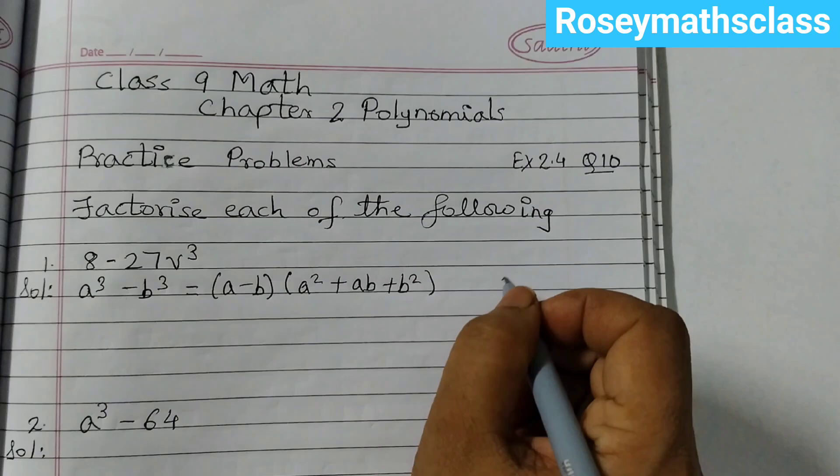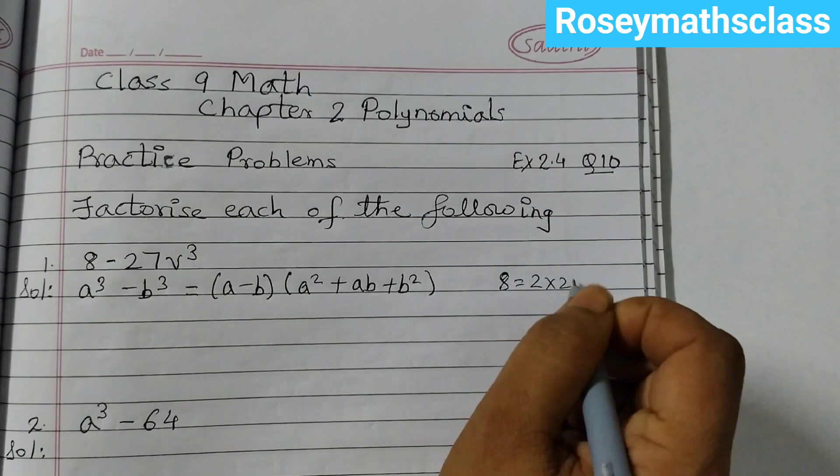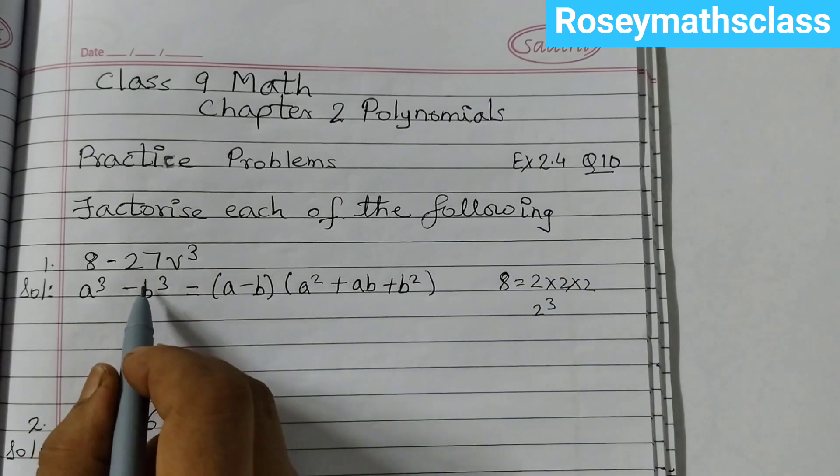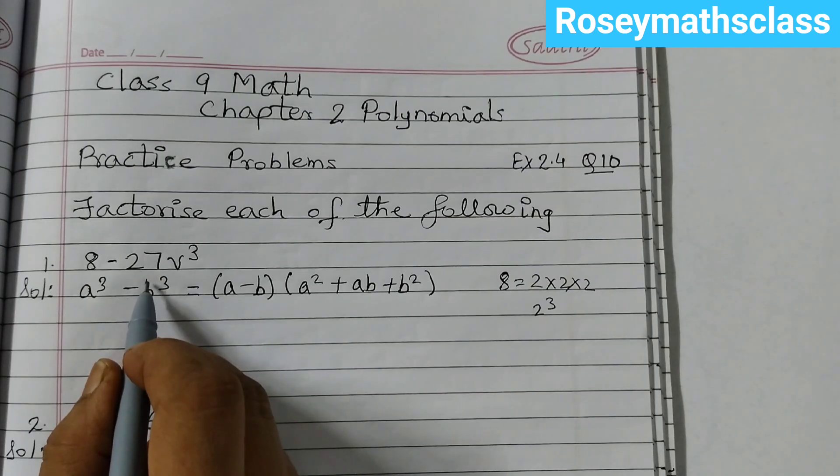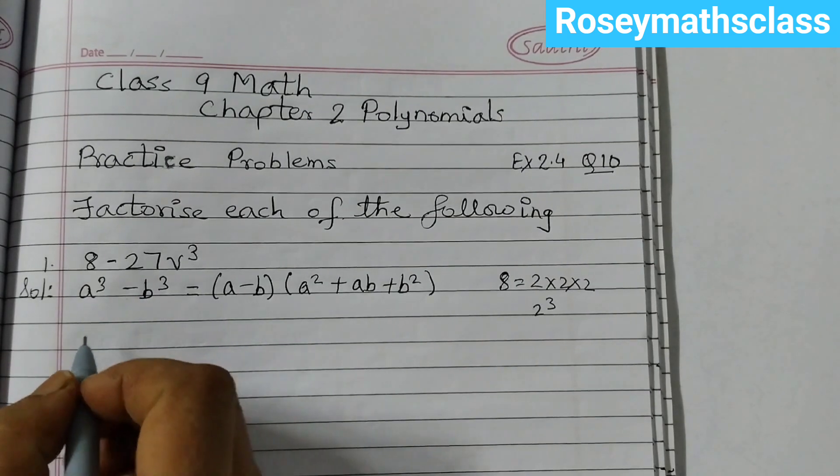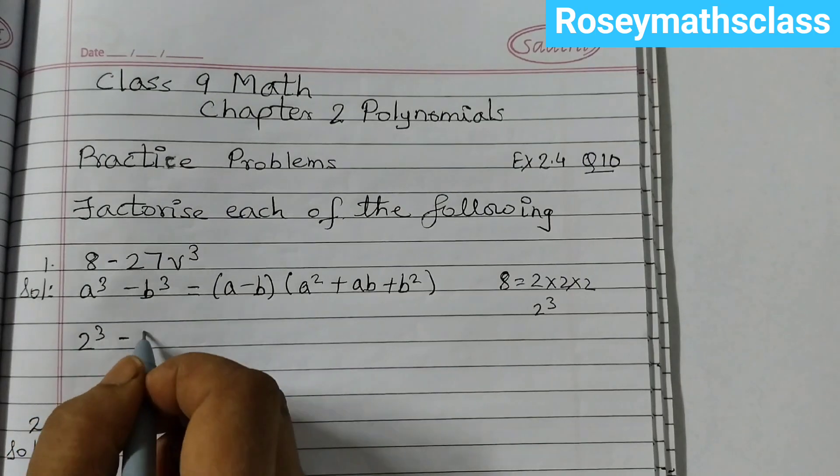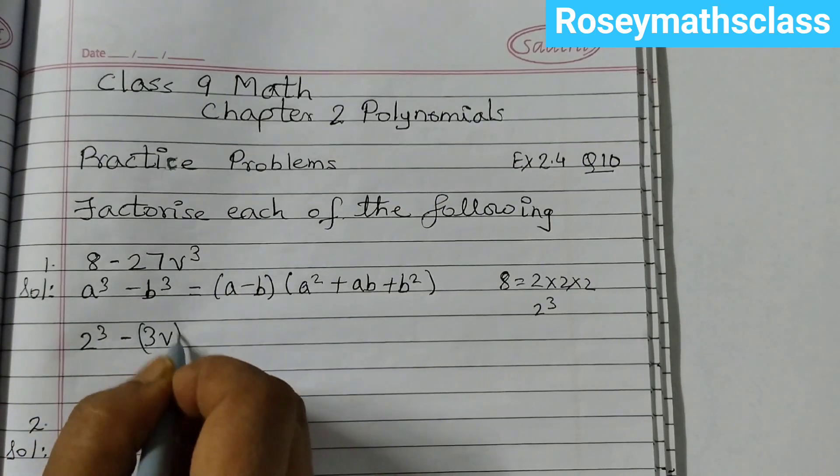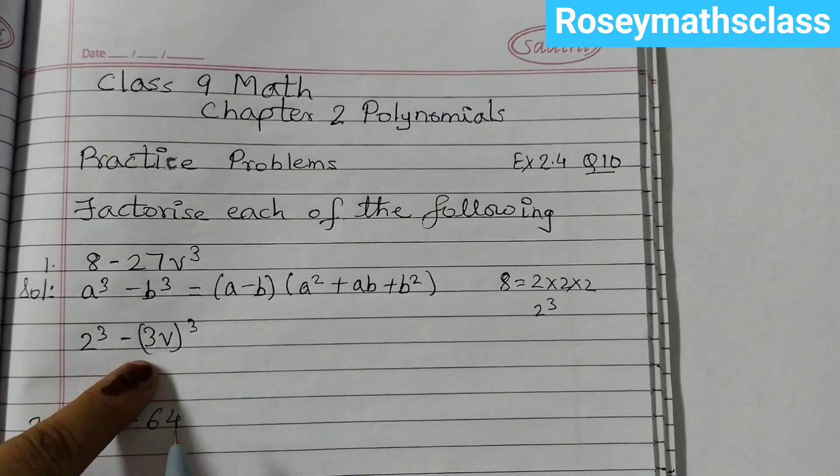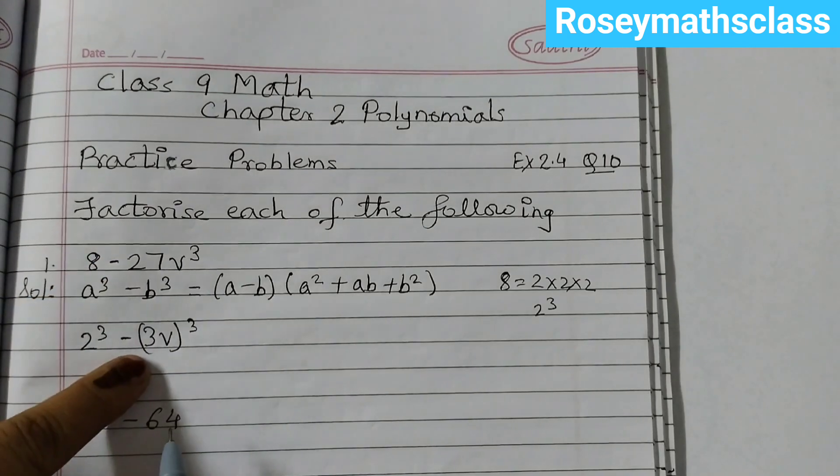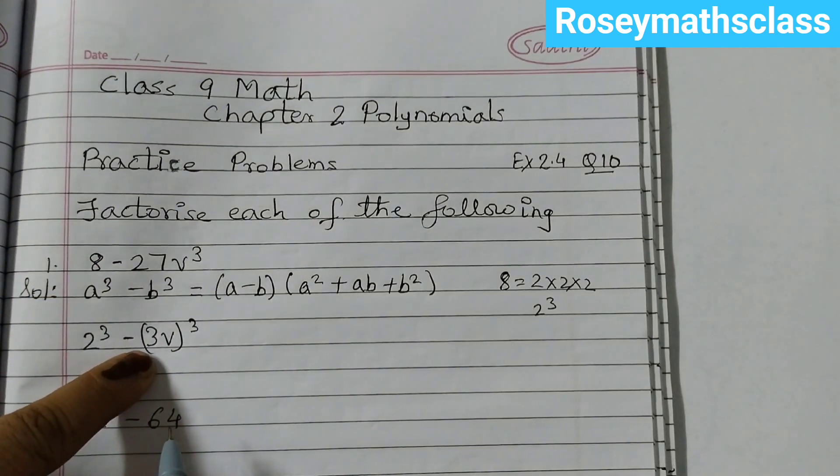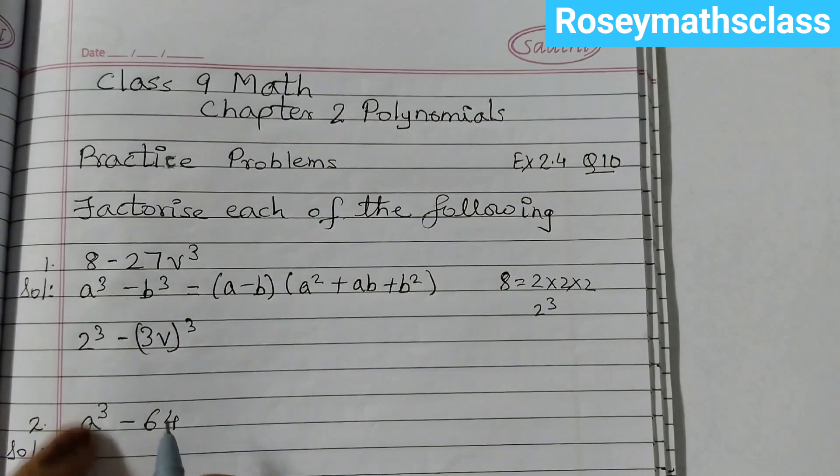Now 8 can be written as 2 times 2 times 2, that is 2 cubed, and 27 can be written as 3 cubed. So this we will rewrite as 2 cubed minus 3V the whole cube. This value and this value is the same. 3 times 3 times 3 is 27 and then V cubed.